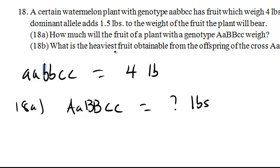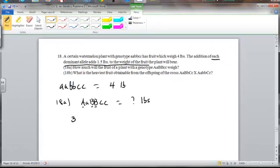Alright, so please recall from this, each dominant allele adds 1.5 pounds to the weight of the fruit. So by my count, we've added 1, 2, 3 dominant alleles. Alright, so what I'm going to do here is just a little math problem. 3 multiplied by 1.5, that's 4.5.